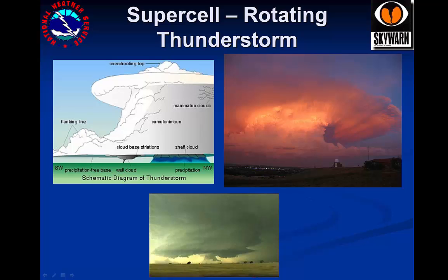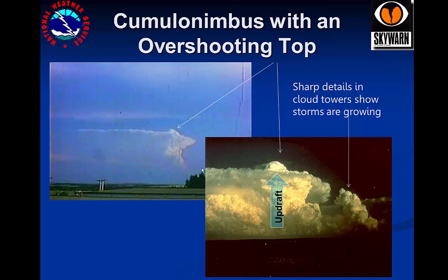Other supercell features include shelf clouds, overshooting tops, and flanking clouds. Features of developed thunderstorms — not necessarily supercells — include the anvil, which is the upper portion of the storm spreading out and freezing at high elevations. Mammatus clouds are bubble-shaped clouds which indicate a mature thunderstorm. Overshooting tops indicate a very strong updraft and look like cauliflower above the anvil — this can indicate a strong storm with heightened potential for severe weather such as large hail. Generally, this feature can only be seen from a distance.